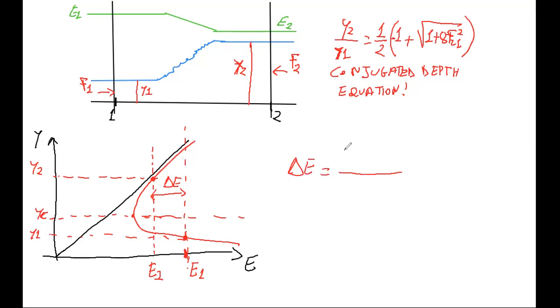This change in the energy delta E is estimated as y2 minus y1 to the power 3 divided by 4 y1 times y2.